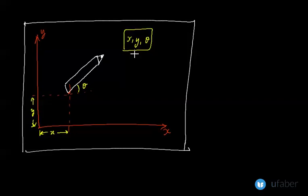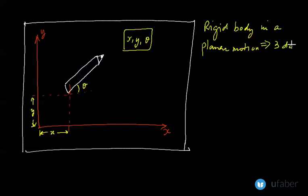This means that if you have a rigid body in plane, so if you have a rigid body in a plane motion or a planar motion, then you will have three degrees of freedom. If we have a rigid body in a planar motion this will give you three degrees of freedom. That would be two linear coordinates and one angular coordinate theta with respect to horizontal or vertical axis.